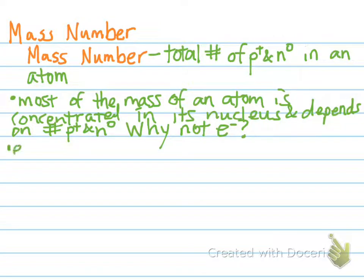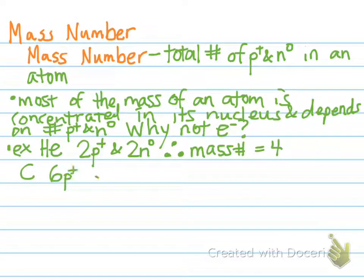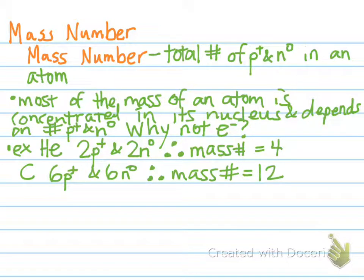For example: helium has an atomic number of 2, so it has two protons. Helium also has two neutrons. Therefore, the mass number of helium is 4. For carbon, carbon has six protons and six neutrons. Therefore, it has a mass number of 12, because six plus six equals twelve. Mass number is always the total number of protons and neutrons.